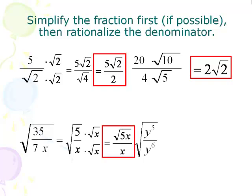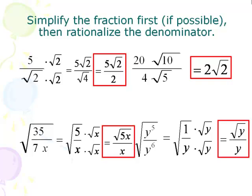On the next one, we want to reduce y to the 5th over y to the 6th. The exponents subtract, leaving y on the bottom, so 1 over y is the reduced version. Now multiply top and bottom by square root of y to get rid of the radical on the bottom. That gives us square root of y on the top over regular y on the bottom — no more square root. Final answer.